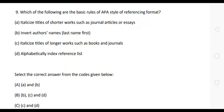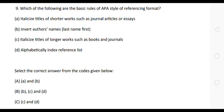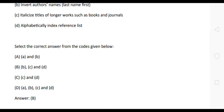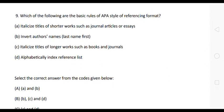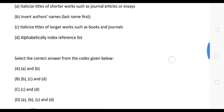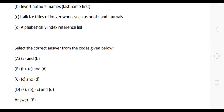The next question is: which of the following are the basic rules of APA style of referencing format? Statement A: italicize titles of shorter works such as journal articles. Statement B: invert authors' names. Statement C: italicize titles of longer works such as books and journals. Statement D: alphabetically index the reference list. The correct answer is Option B — statements B, C, and D are the basic rules of APA style referencing.